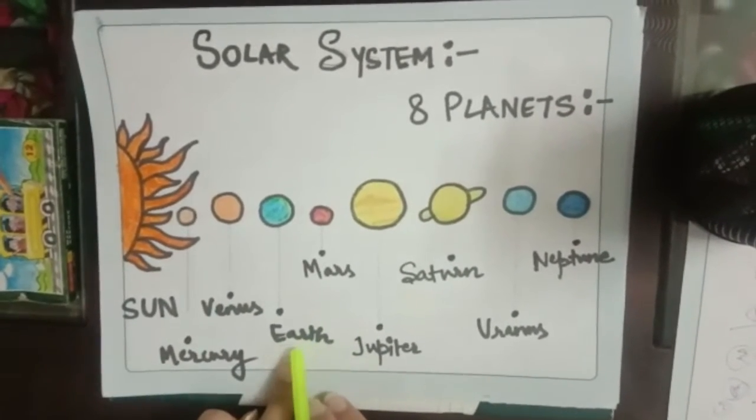Third one is our Earth. It is also known as blue planet. The next one is Mars which is known as red planet. The next one is Jupiter.